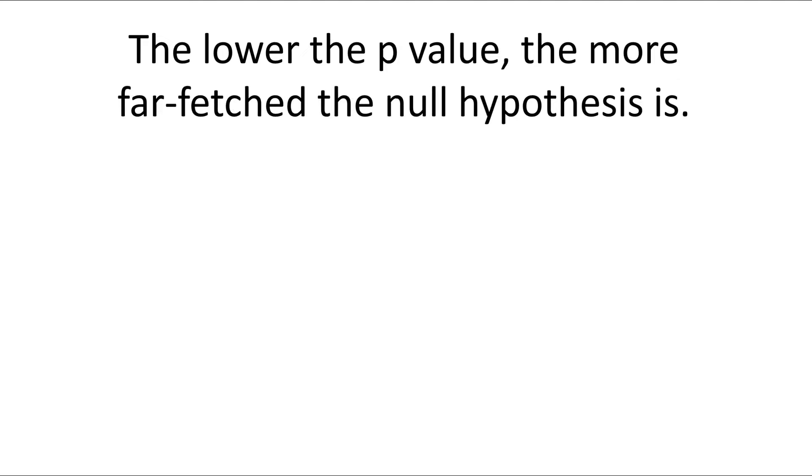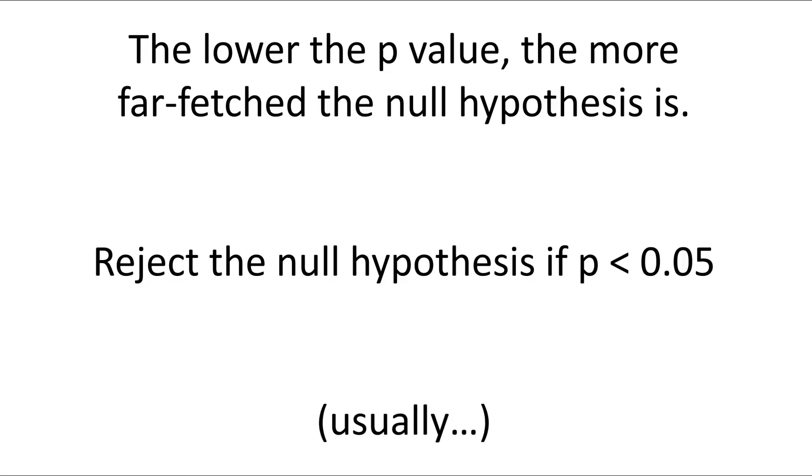Let's summarize. The lower the p-value, the more far-fetched the null hypothesis is. Normally, in science, we can reject the null hypothesis if p is less than 0.05, 5%. This is a convention that we've agreed on. And it works in most cases, but not in every case. As you study more statistics, you'll see why this convention doesn't apply to every scenario.